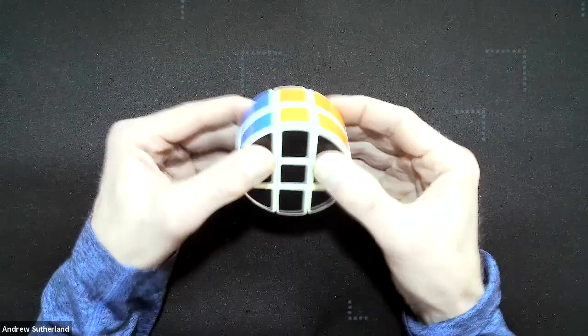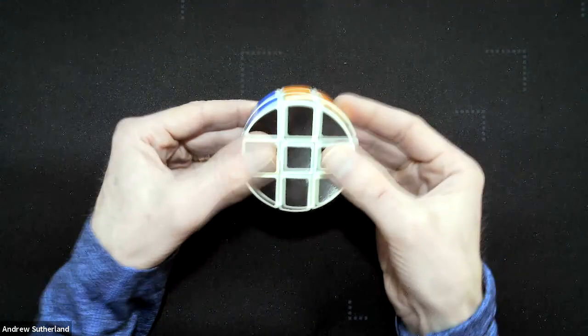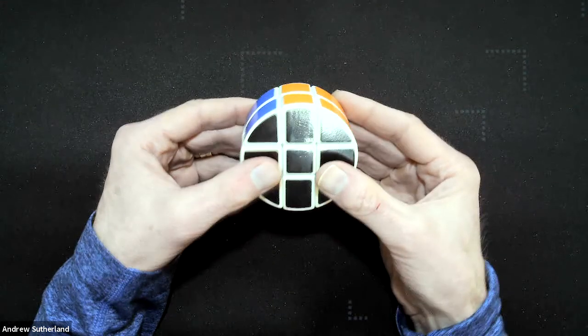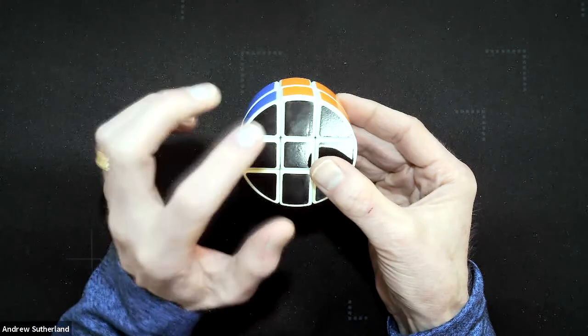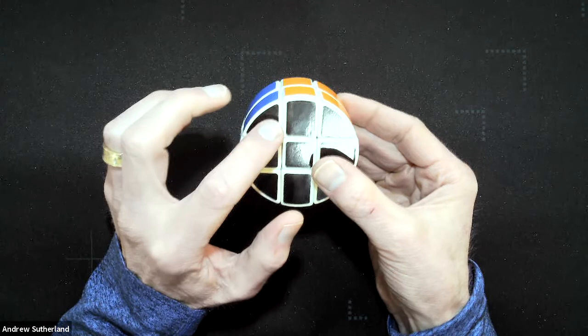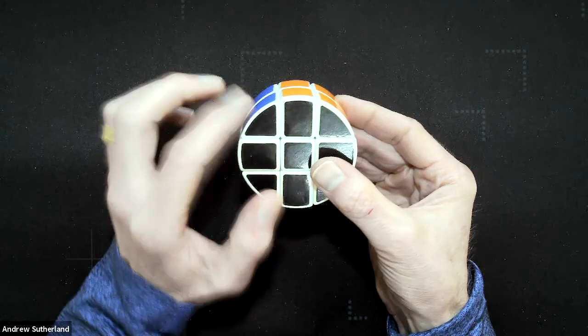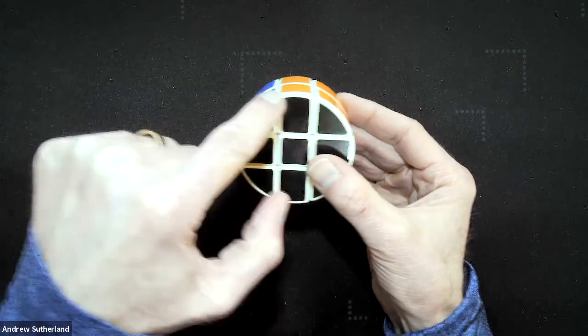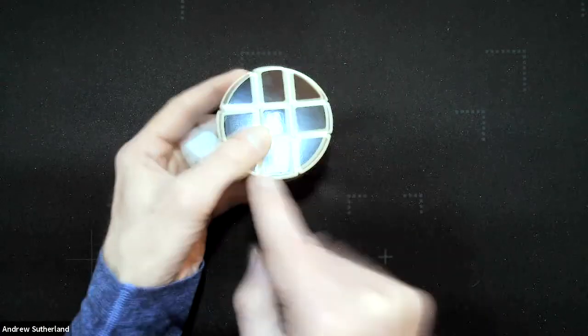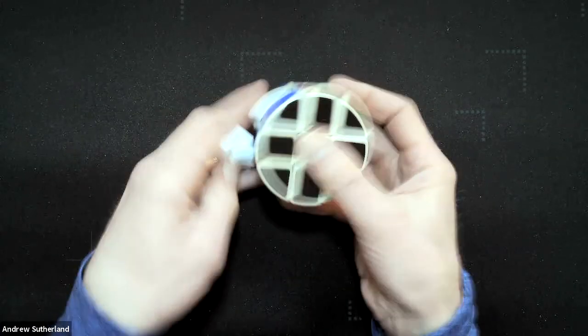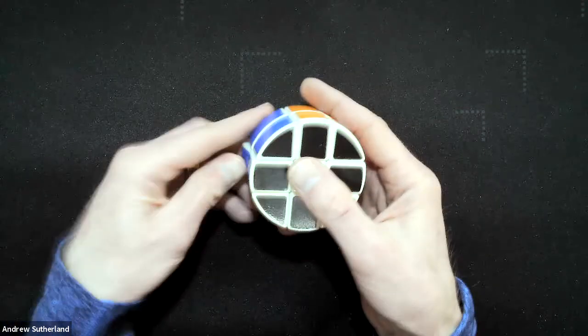And we say a solved cube is in its standard configuration if it's as I'm holding it here, with the blue and what in the problem set would be a white edge in the upper left front. So this is the upper edge, this is the left edge, this is the right edge, and this is the front edge. Oops, and I just lost a puzzle piece there, but this cube is broken.